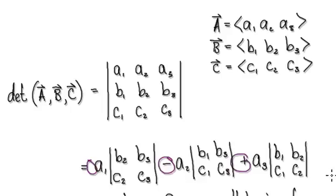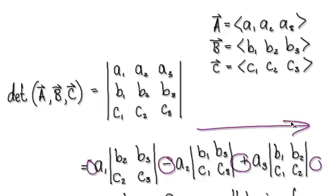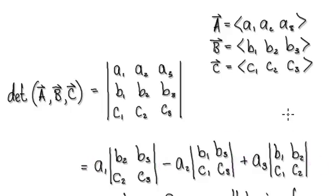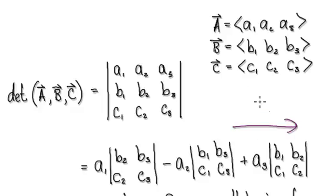The signs always alternate: positive, negative, positive — and if you were to extend it further it would continue negative, positive, negative. But we are only concerned with 2D and 3D.